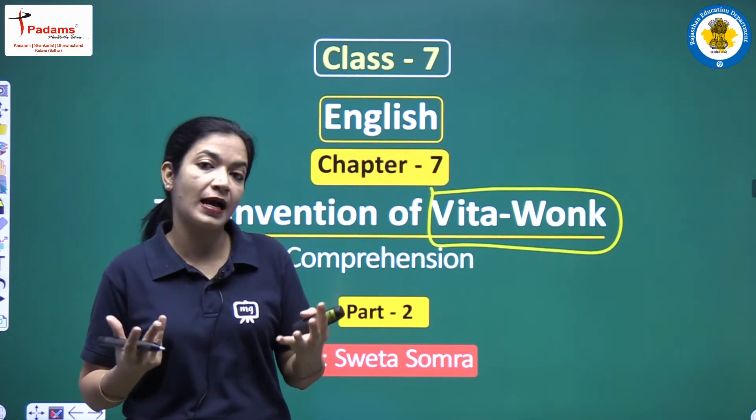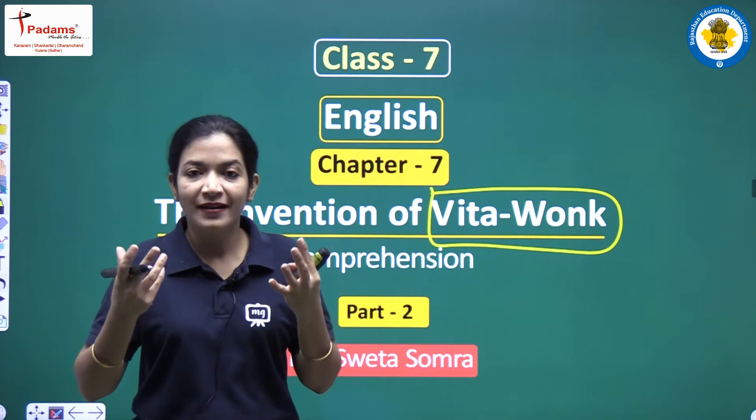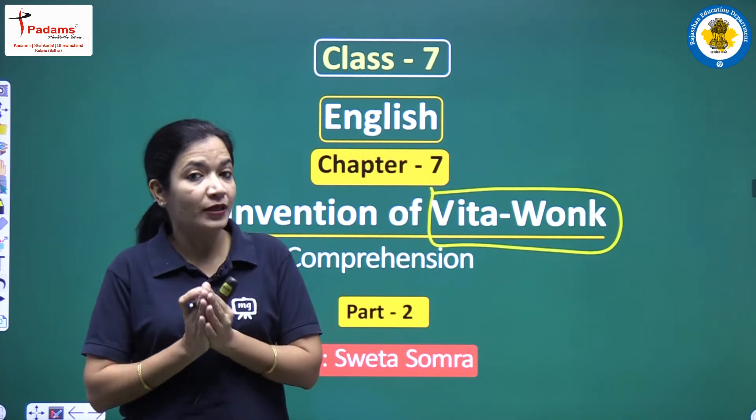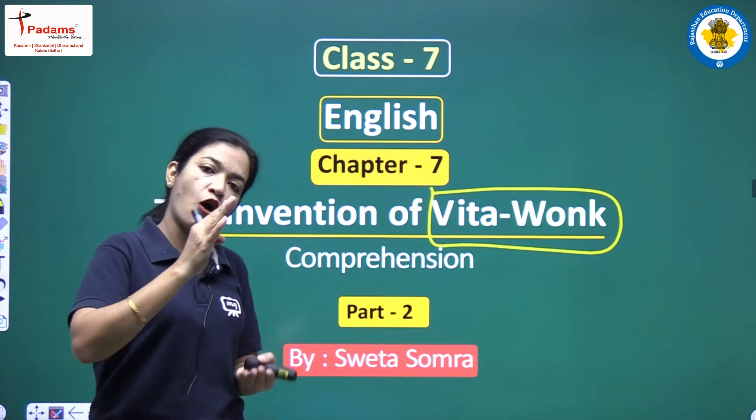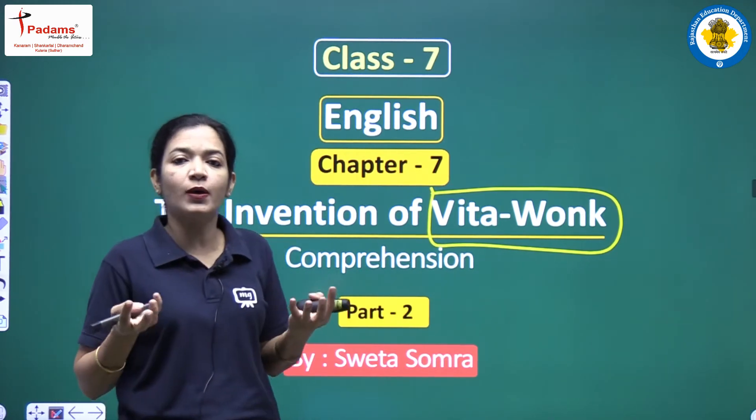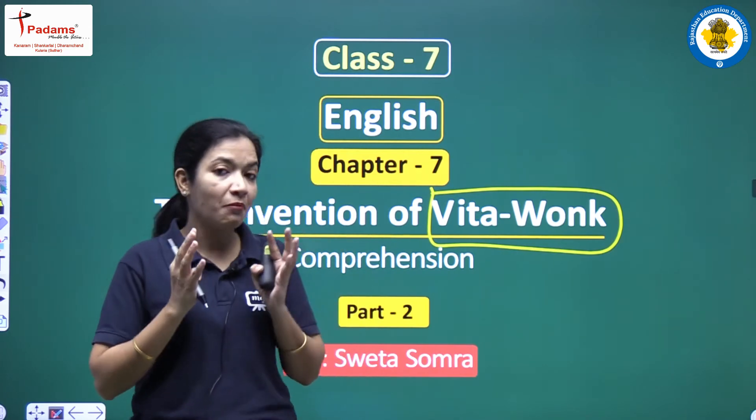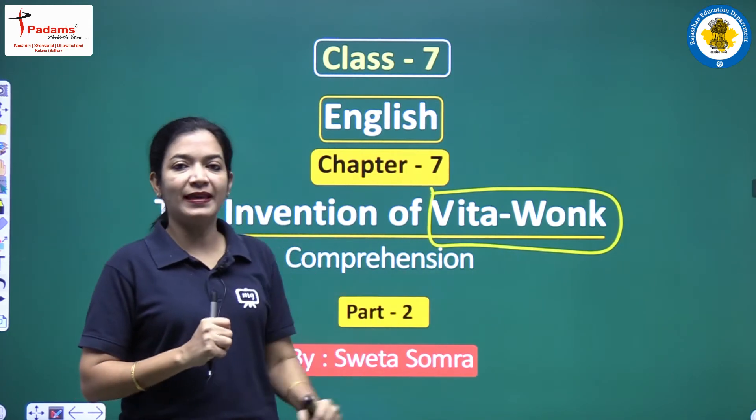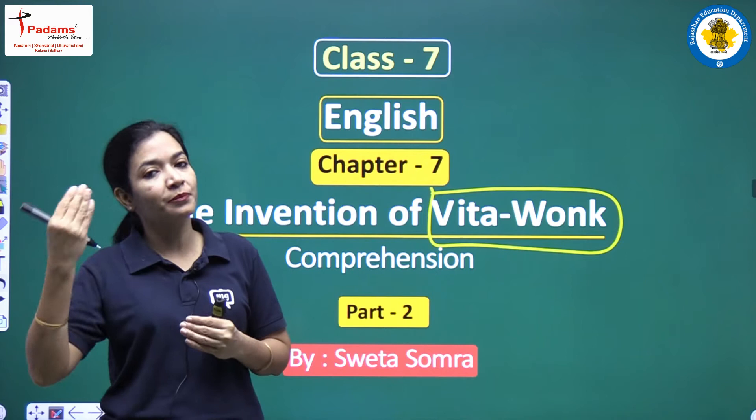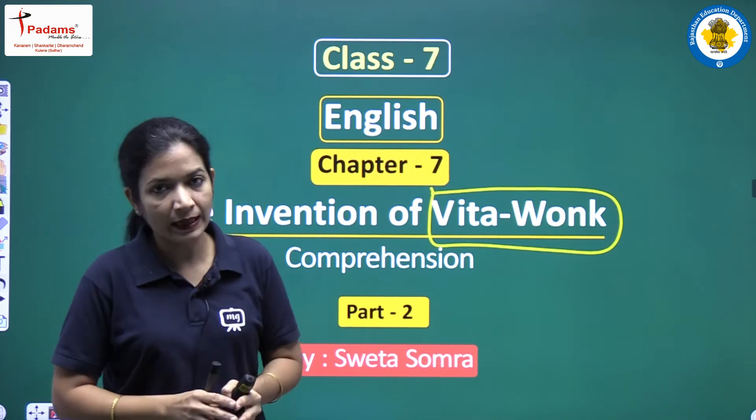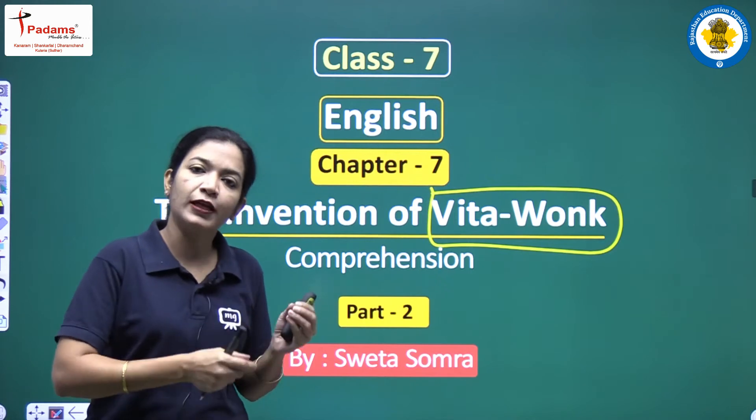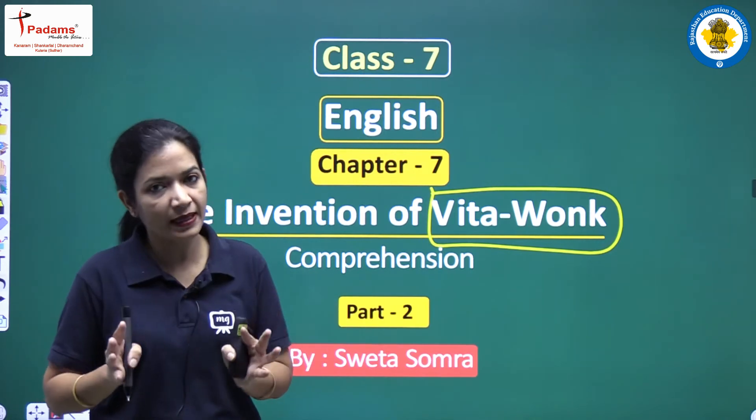He collected at least 10 of them. Now he will start beginning the invention of the product which is Vita-Wonk. This is the opposite of Wonka White. Wonka White decreases age, but Vita-Wonk will increase a person's age. This was his option if people become too young, they can drink this to become older again.